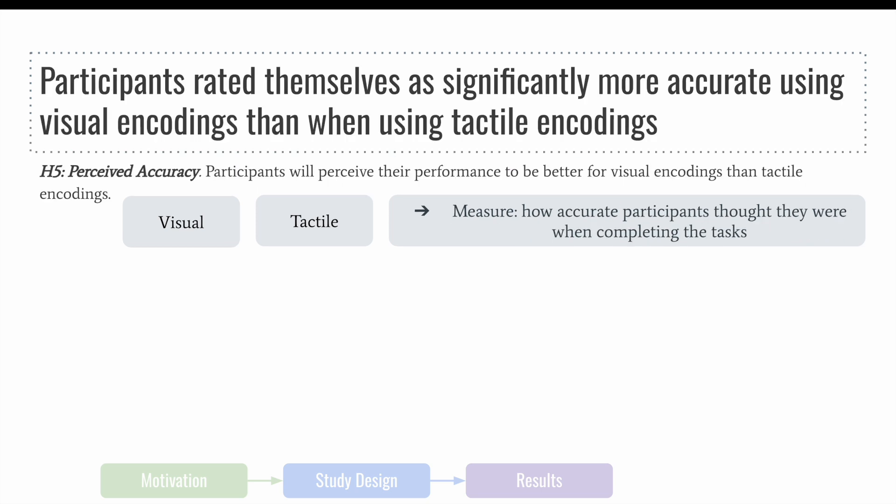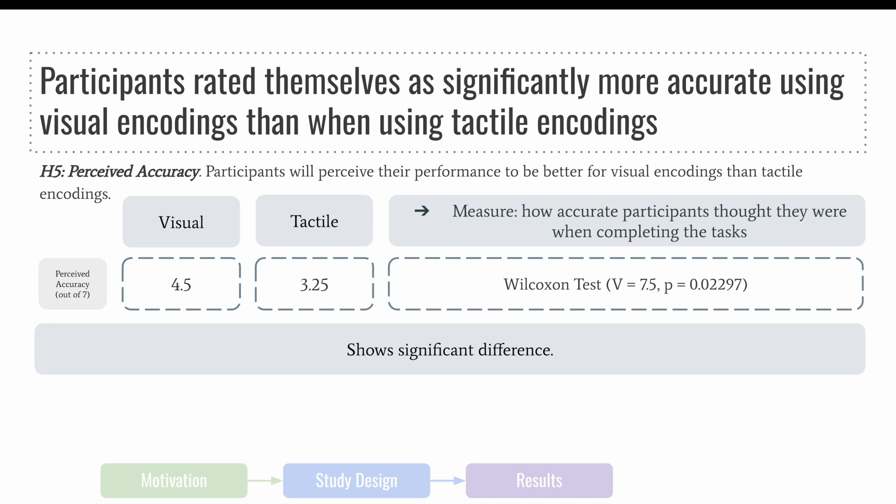For our last hypothesis, we asked participants to self-assess how accurate they believed their responses to be on a scale from 1 to 7. Participants indicated that they felt they were more accurate in the visual condition compared to the tactile. Using a Wilcoxon signed rank test, we found their self-assessments to be significantly different.